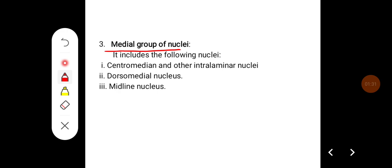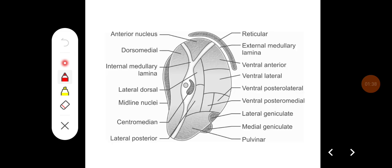The medial group of nuclei includes the centromedian or interlaminar nuclei, the dorsomedial nucleus, and the midline nucleus. This is the structure of the thalamus, which has been divided into three important groups of nuclei by the internal medullary lamina.